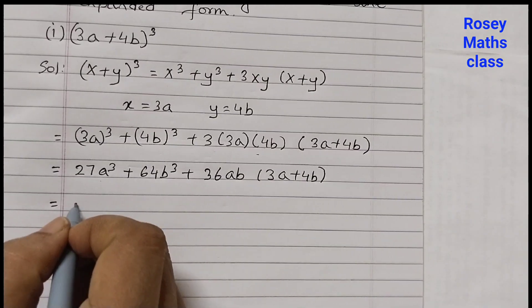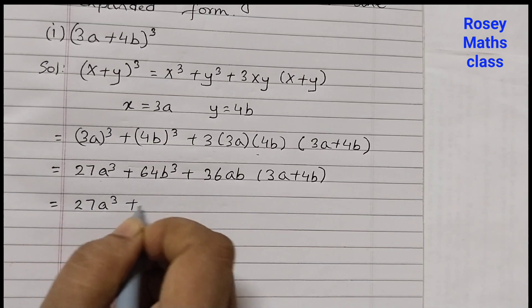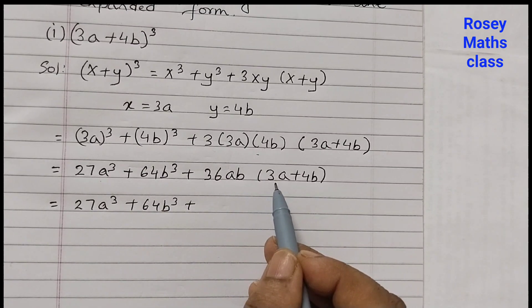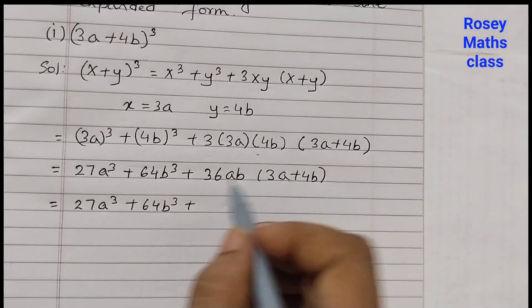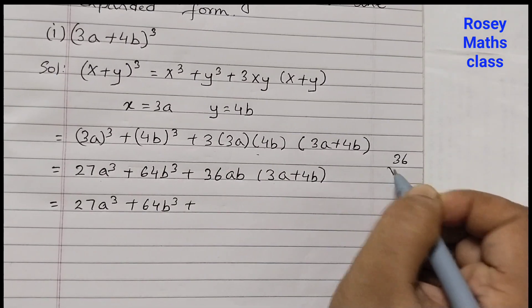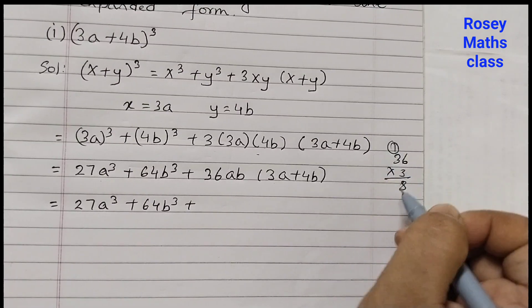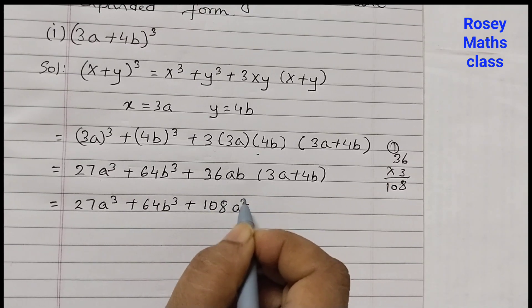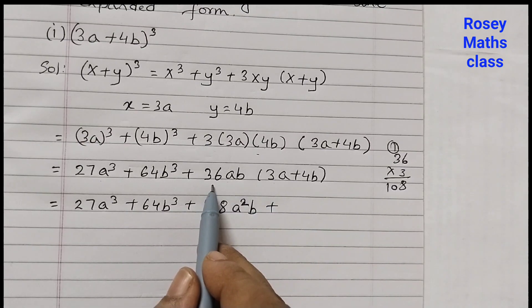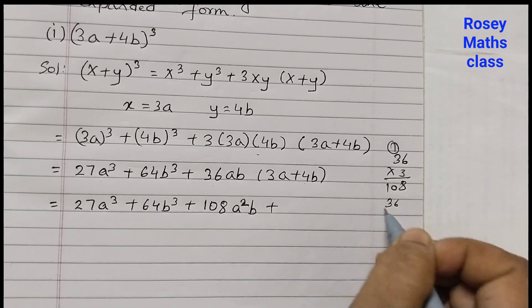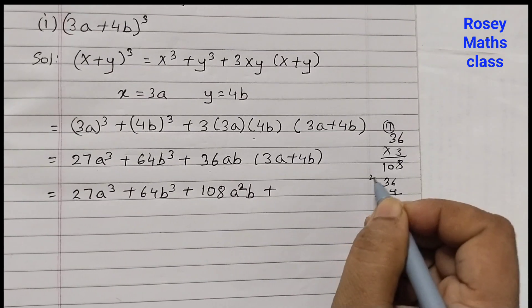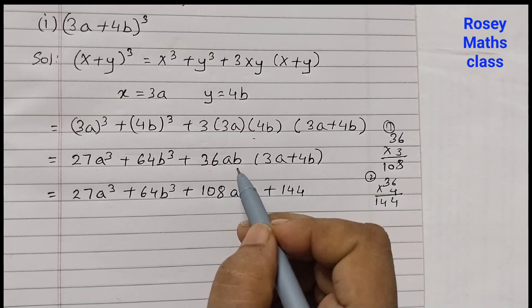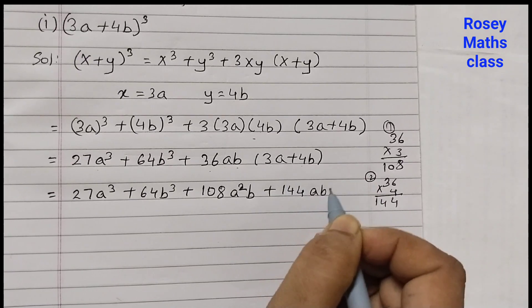Next step: 27a³ + 64b³ plus, now we are going to multiply 36ab first with 3a and then with 4b. So 36 into 3: 6 times 3 is 18, 3 times 3 is 9, so 108. 108a², times a is a²b, plus 36 into 4: 6 times 4 is 24, 3 times 4 is 12, so 144ab².